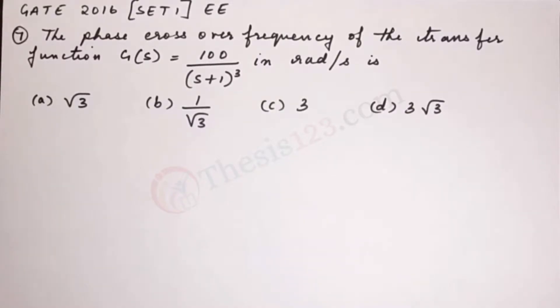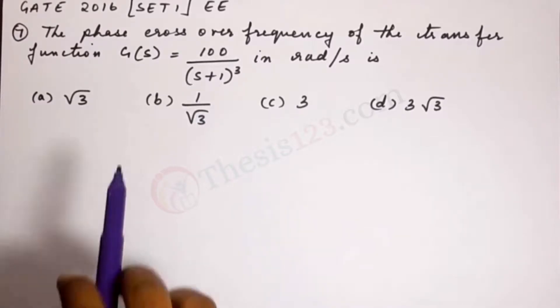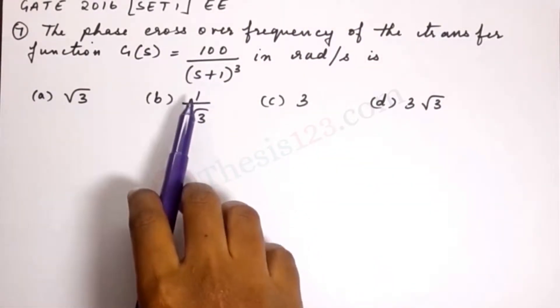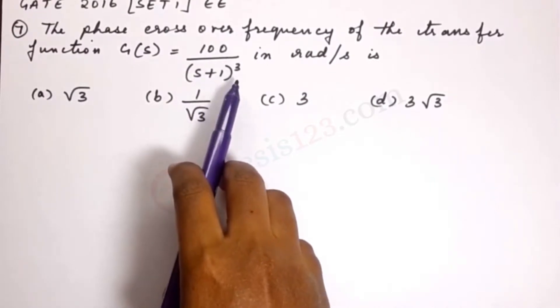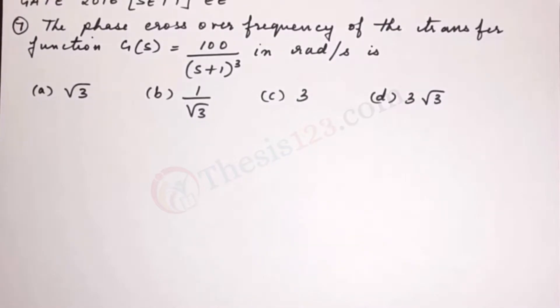Here's the seventh question. The phase crossover frequency of the transfer function given g of s is equal to 100 over s plus 1 cubed in radians per second is one of the four choices.